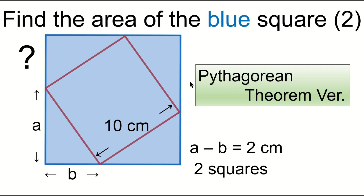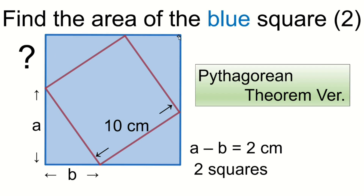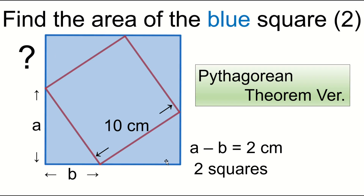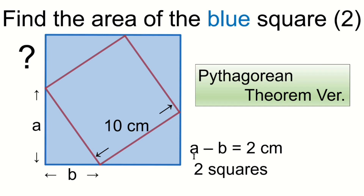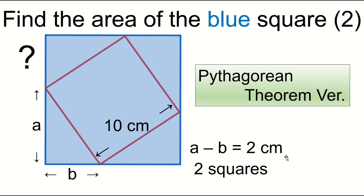Before solving the problem, please subscribe to my channel. Then, find the area of the blue square. There are two squares. The length of this line segment is 10 centimeters. A minus B equals 2 centimeters.